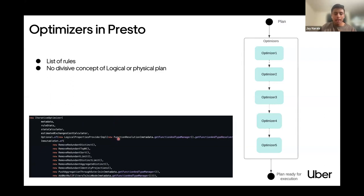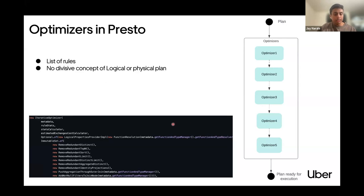In Presto, we use a heuristic optimizer — we don't have a volcano optimizer or cascade-related optimizers like Calcite and other engines use. At each point during transformation, there is just one best plan. There's also no distinct concept of logical versus physical plan in Presto. Other engines have logical plans, then transform to physical plans, then wrap around operators. In Presto, we just have a simple plan interface with rules that transform logical nodes to physical ones.